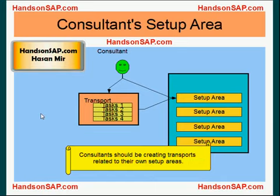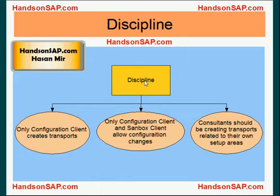Another rule that should be followed is consultants should be creating transports related to their own setup areas. No other consultant should be creating transport for this setup area. If general ledger or financial is a setup area for this consultant, then no other consultant should be stepping in, and this consultant should not be creating transport for any other setup area. That's very important. So if you follow this discipline — only the configuration client creates transports, only configuration and sandbox clients allow changes to configuration tables, and consultants create transports related to their own setup area — this discipline should be followed all the time.